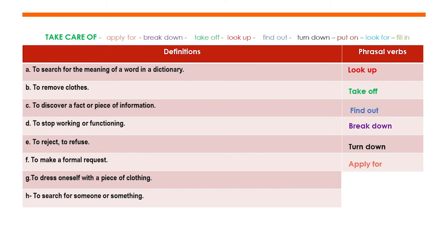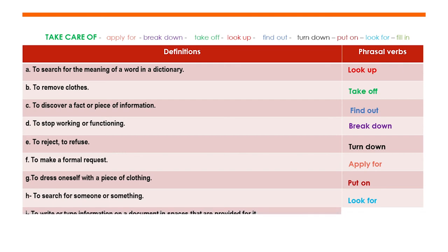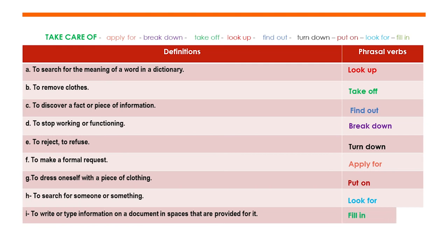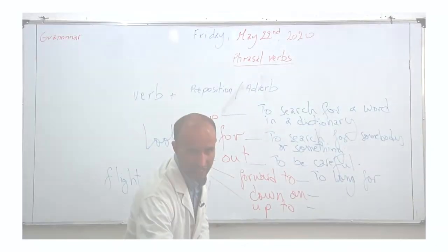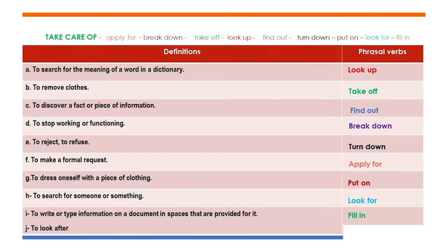G: to dress oneself with a piece of clothing, for example a hat or a jacket — 'put on.' H: to search for someone or something — 'look for.' I: to write or type information on a document in the spaces provided — for example in exercises you may be required to fill in the gaps — that's 'fill in.' And the last one: to look after someone is to take care of him or her — 'look after.'